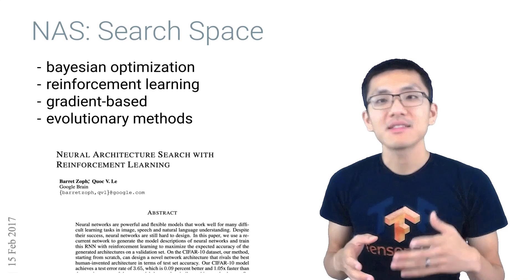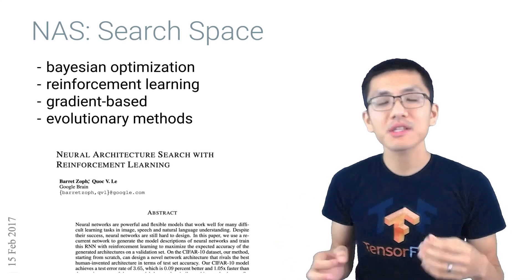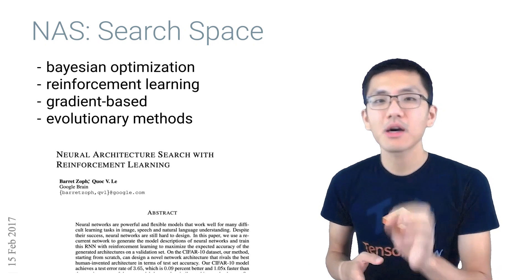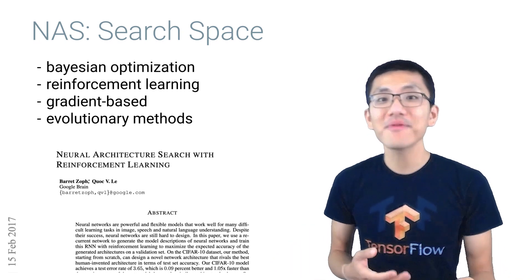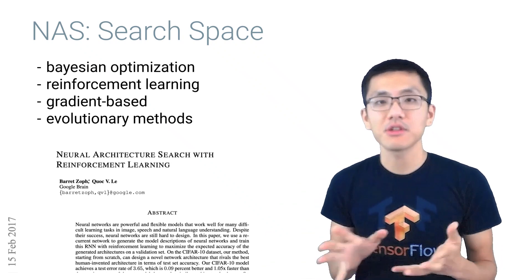Once the search space is defined, we need a search strategy. This step is all about how we explore the various model architectures. This is important because we want to reach a good model quickly. And in some cases, a search space may contain infinite model architectures to choose from, so we can't actually perform an exhaustive search.